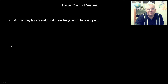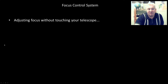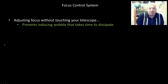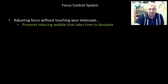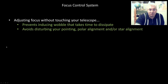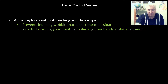Let's start by touching on what's the benefit of remotely controlling your focus rather than just going up to a telescope and turning the focus control knob. The obvious thing is it prevents you from making the telescope wobble, and that wobble can take time to dissipate, it spoils your view, but also it can actually disturb your pointing, your polar alignment, your star alignment, and your telescope pointing — all disturbed by touching it.